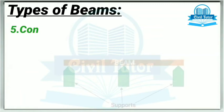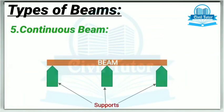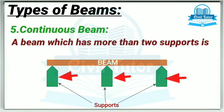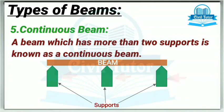The fifth one is continuous beam. A beam which has more than two supports is known as a continuous beam.